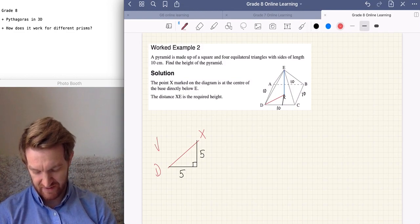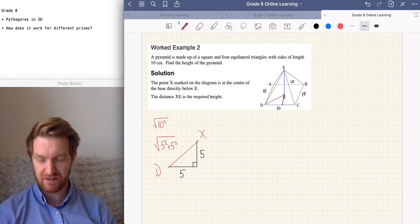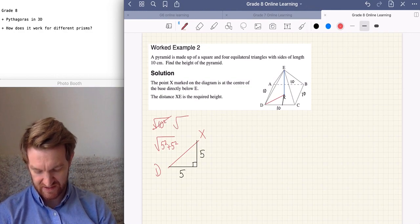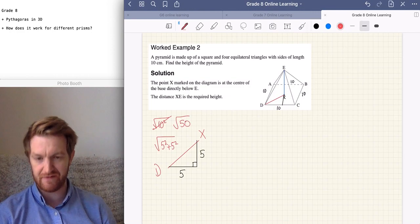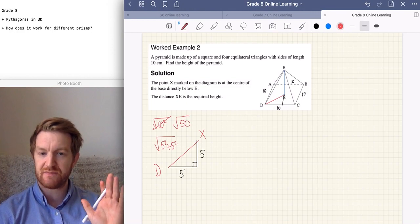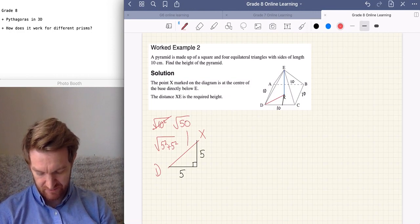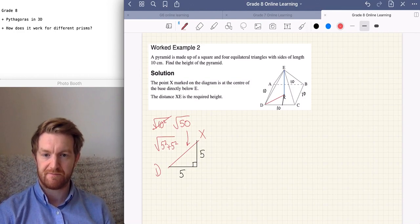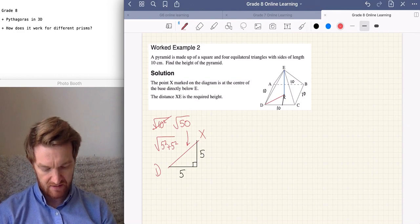So, then, our square root here is going to be 5 squared plus 5 squared. Now, I see a lot of students say that's going to be 10 squared. It's not. Okay, it's actually going to be 25 plus 25. It's going to be the square root of 50. Again, don't simplify it. Leave it as a square root. Leave it as the square root of 50.